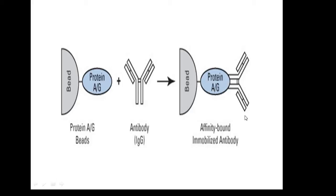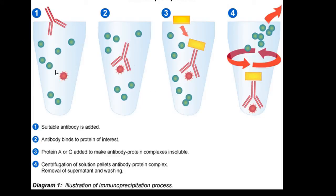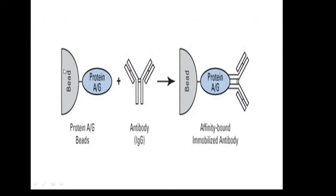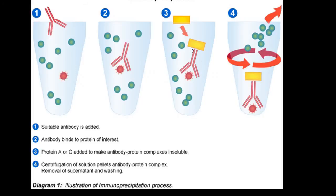In most cases the antibody is added first — this is known as the free antibody approach. The antibody is added to the test tube and after it binds to the target protein, the beads are added so that they will bind to the Fc portion, followed by centrifugation to allow precipitation. In this example we can see the free antibody approach: antibody is added first, it binds to the target protein, then beads coated with protein A or G are added to bind the Fc region.